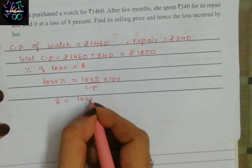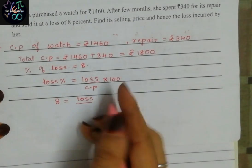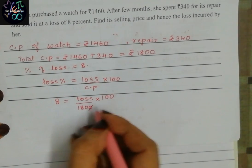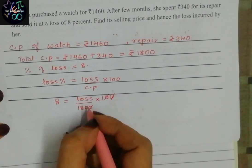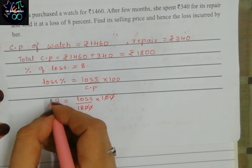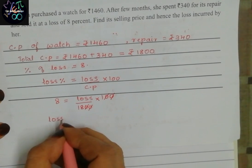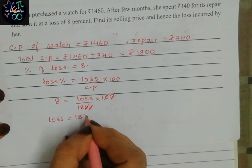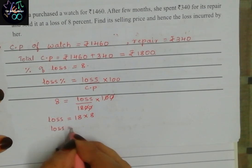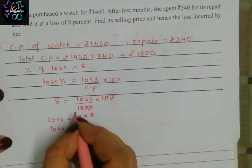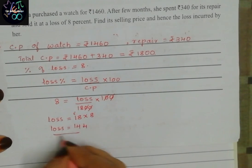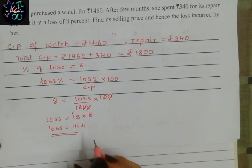So 8 equals loss upon 1,800 into 100. Zero gets cancelled with zero. This 18 is in divide position, so we have to multiply if we bring here. So loss equals 18 into 8. Loss equals 144. How much loss incurred? That is 144.